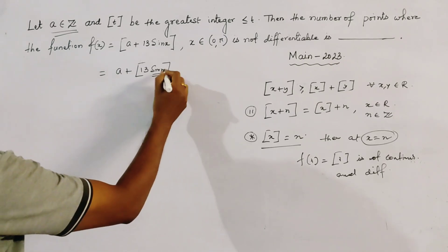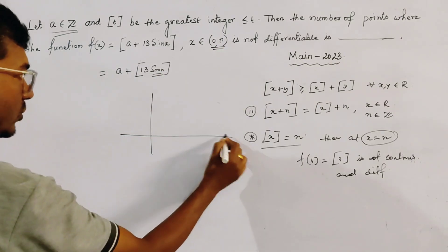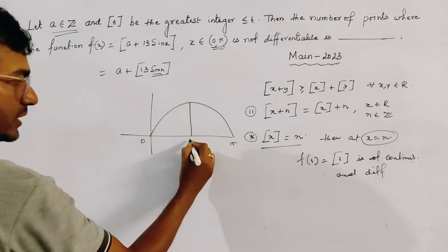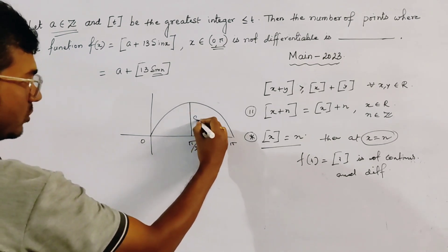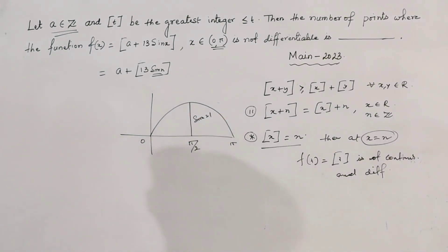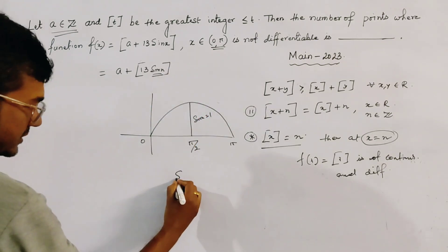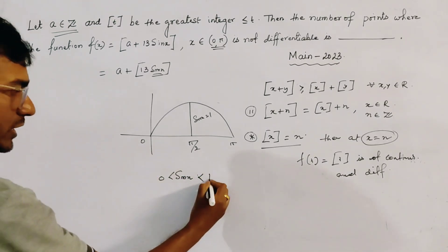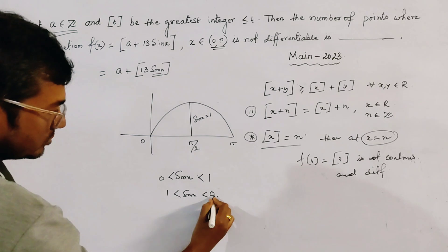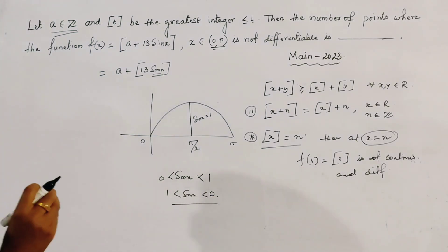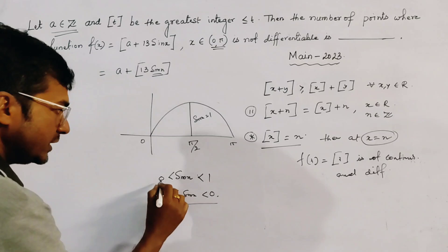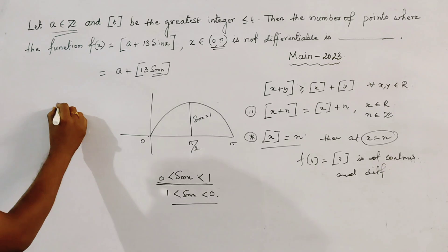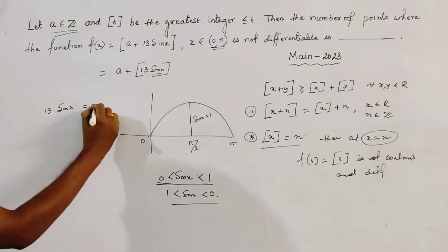The value of sin x on [0, π] first increases from 0 to 1 and then decreases from 1 to 0, with the maximum value of sin x equal to 1 at x equals π/2. We need to find the points in [0, π] where 13 sin x is equal to an integer.